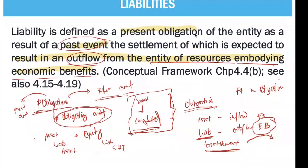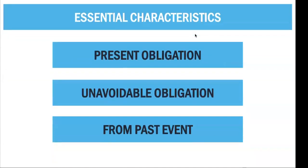Having defined your liabilities, we look into the essential characteristics. First, it must be a present obligation — meaning it is existing. There must be a past event which obligates you currently to settle a liability. When we say present obligation, there must be a current obligation, because once the obligation ceases, it is now considered not a liability.